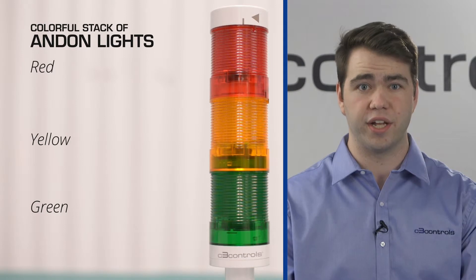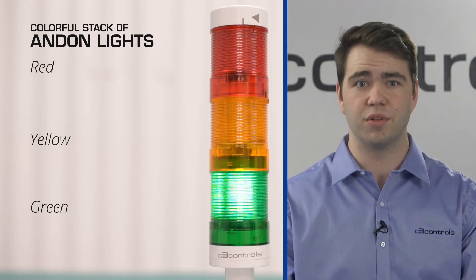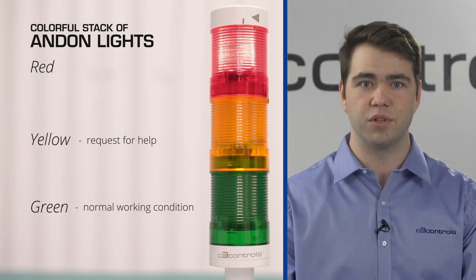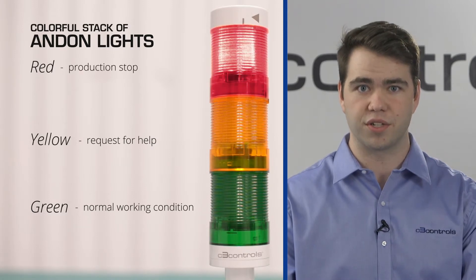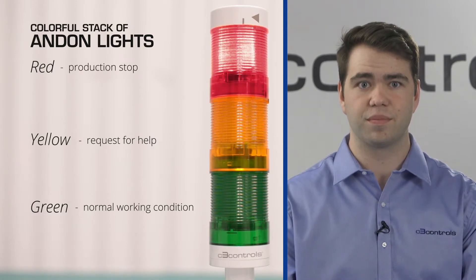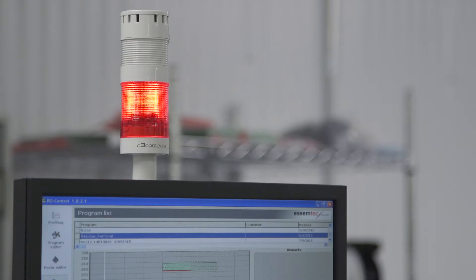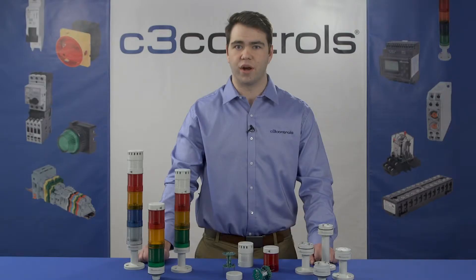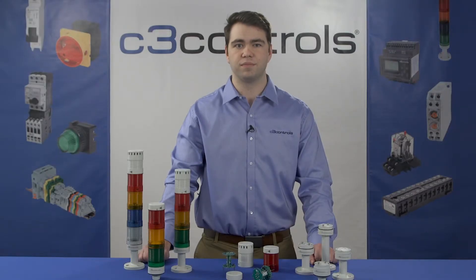As with regular tower lights, green symbolizes a normal working condition, yellow symbolizes a request for help, and red symbolizes production stop. The red light comes with an alarm. Sometimes these lights can be linked to automated systems so they can detect problems easily.